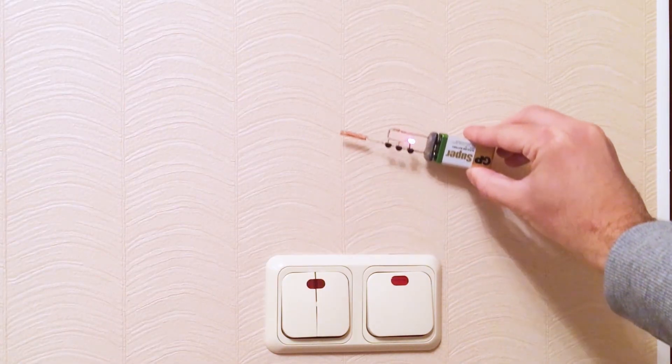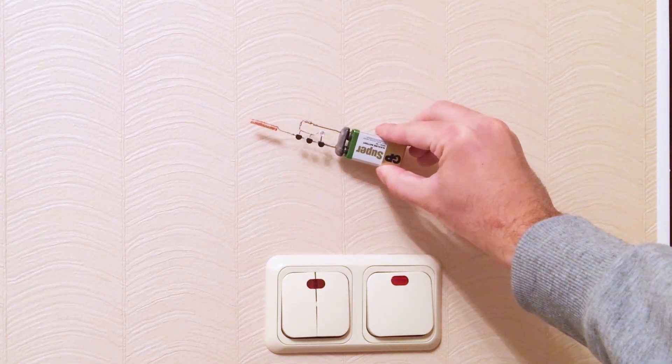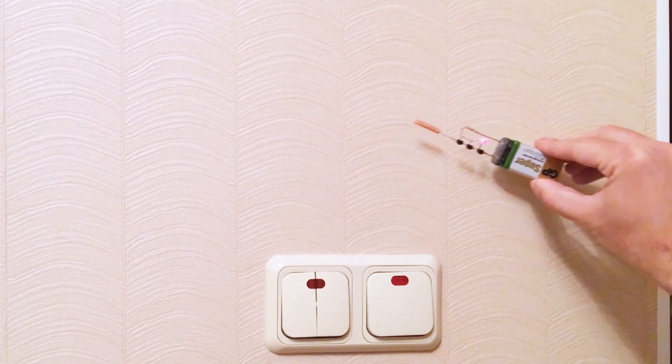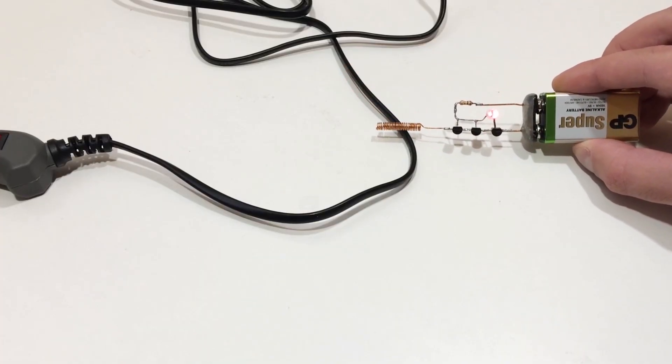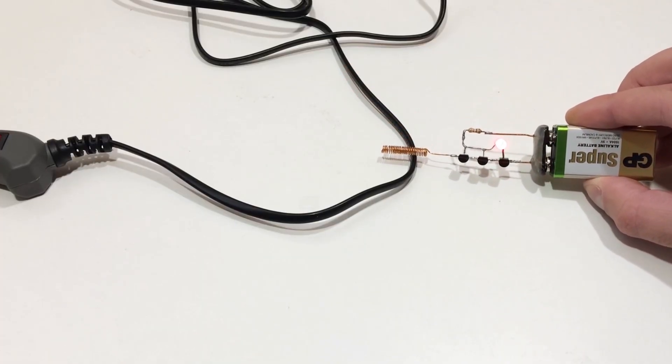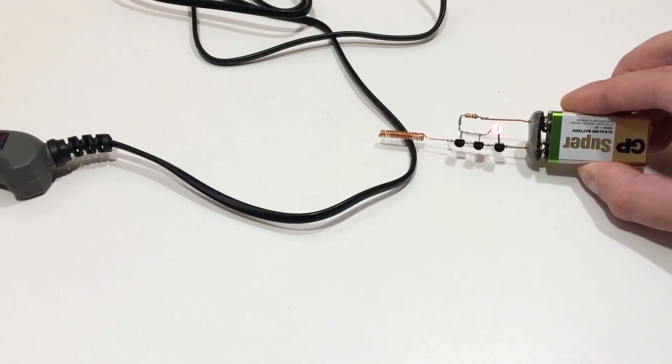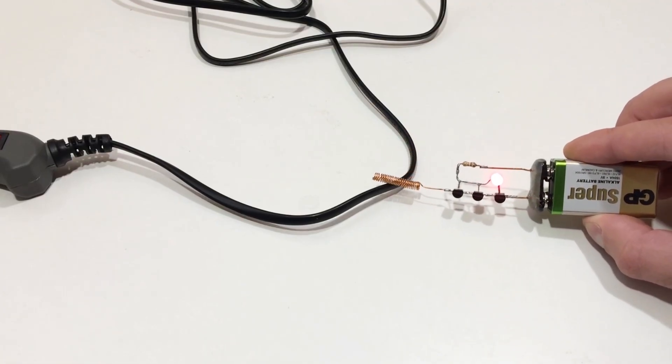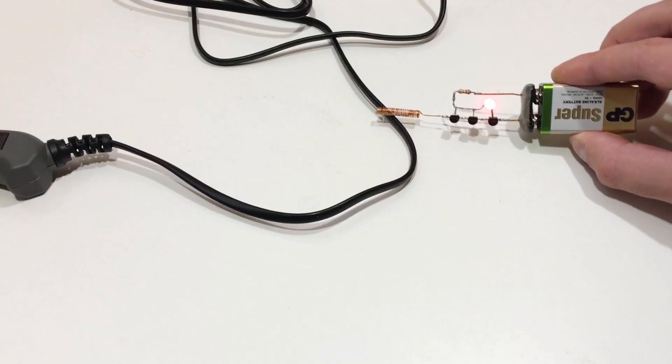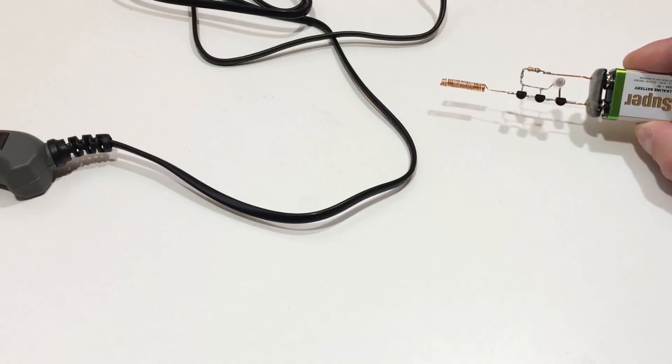Now here are some ideas to improve the design. Add a buzzer or piezo speaker for an audio alert, not just the LED. Use a telescopic antenna for greater sensitivity. Replace the 9-volt battery with a rechargeable lithium-ion cell and USB charging. Add a sensitivity control so you can fine-tune detection. Or mount everything inside a small plastic case to make it more durable and user-friendly.